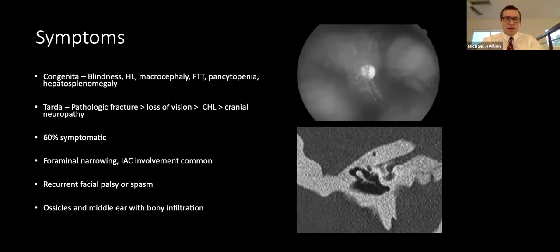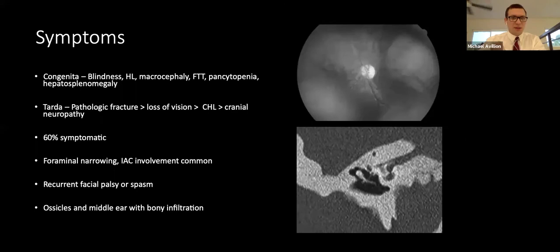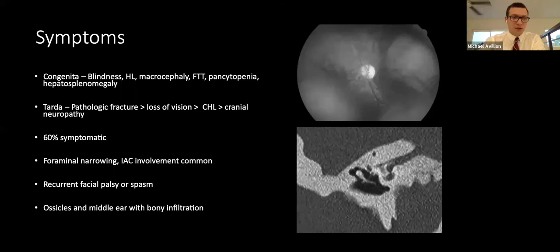The pathologic symptoms of osteopetrosis arise from narrowing of spaces, canals, and foramina, along with direct bony infiltration. The congenital type manifests as blindness, hearing loss, dentition abnormalities, macrocephaly, failure to thrive, pancytopenia, and hepatosplenomegaly. A fundoscopic image demonstrates a pale optic disc from optic nerve atrophy. The tarda variant is usually diagnosed late in childhood or adulthood, most often discovered on x-ray with broken bones, with the most common neurologic finding being loss of vision from optic nerve atrophy.